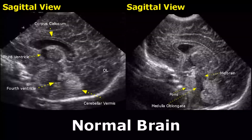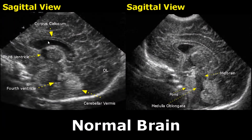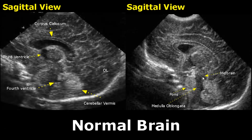These are sagittal views of a normal brain in a full-term infant. This layered structure is the corpus callosum. Below that, the anechoic area is the lateral ventricle. Below the lateral ventricle is the third ventricle. As we go down we will find the midbrain, the pons, and the medulla oblongata. Behind these is the hyperechoic cerebellar vermis.